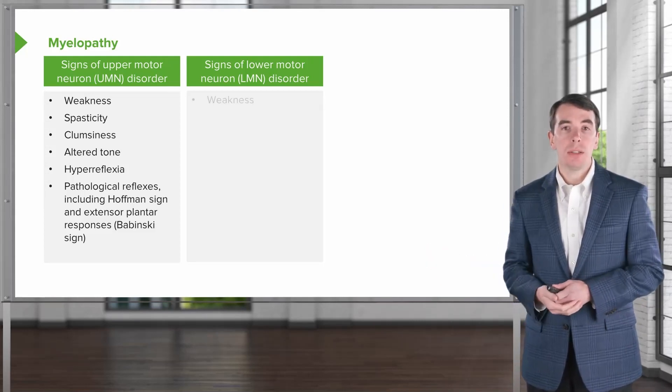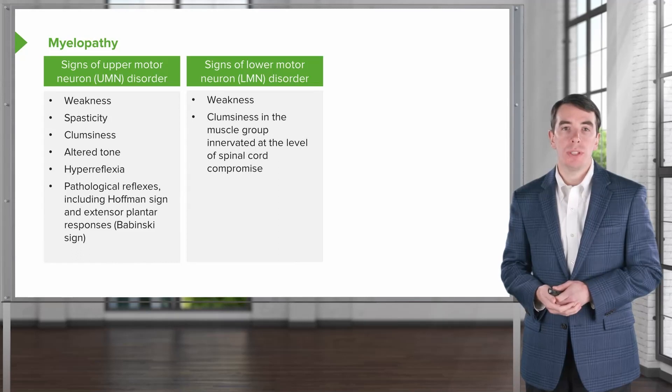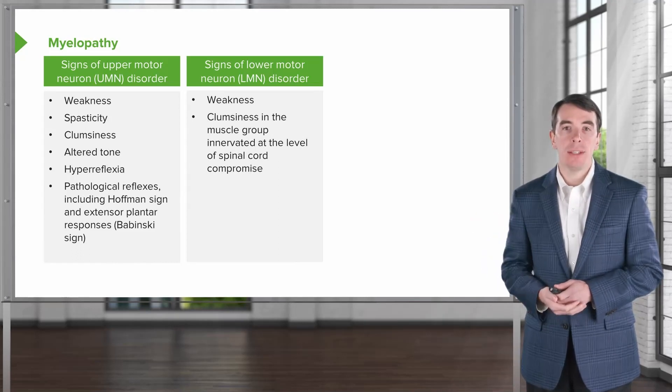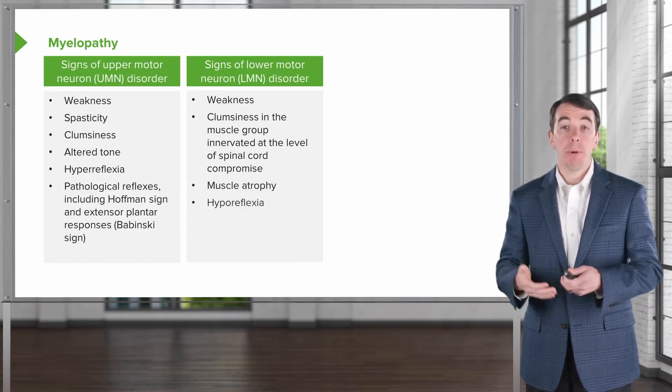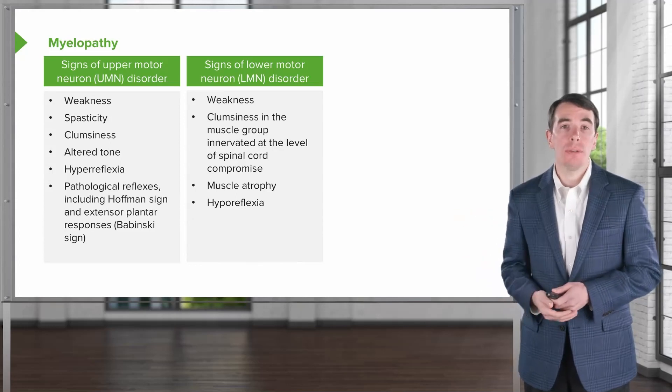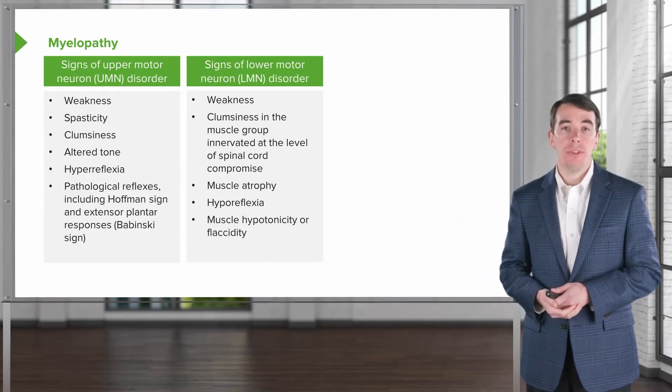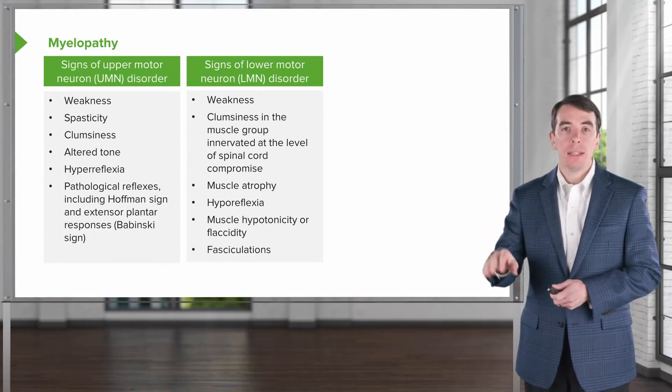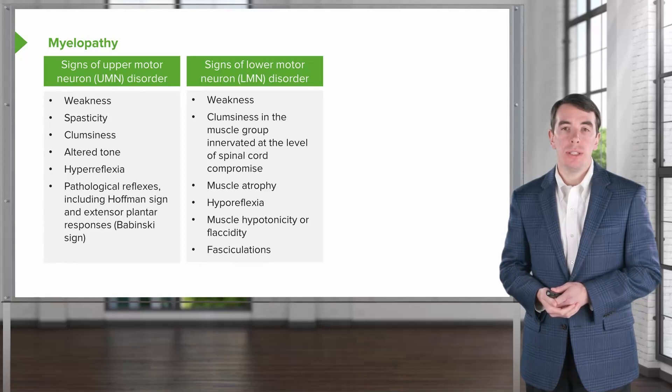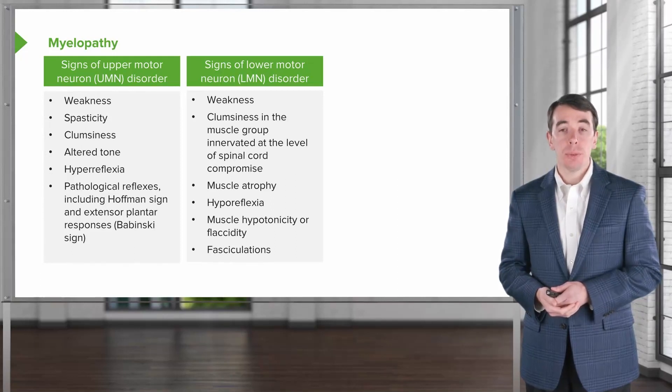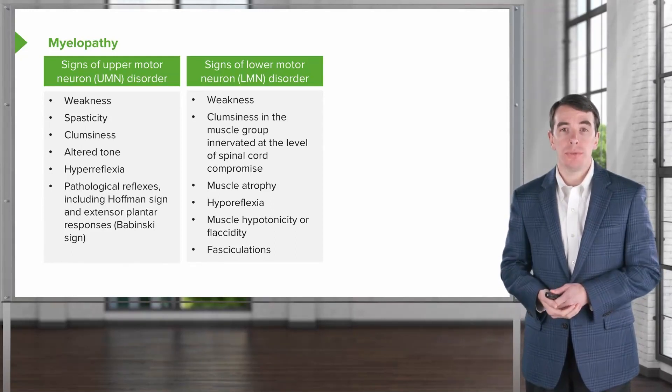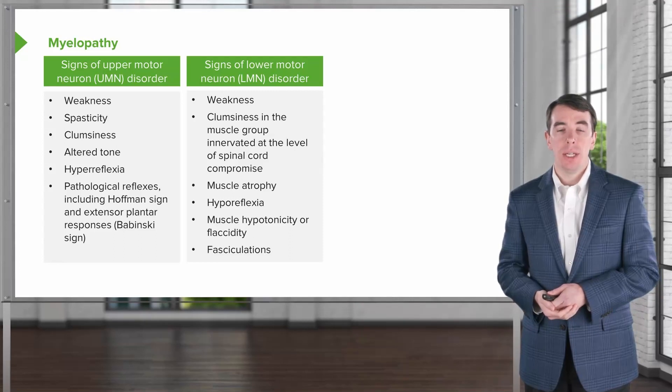Lower motor neuron signs may include weakness, clumsiness in the muscle group that's innervated at that level, the myotome, muscle atrophy, hyporeflexia at the level of the lesion, muscle hypotonicity or flaccidity of the muscles, and fasciculations. Fasciculations are involuntary movements of the muscle, a lower motor neuron sign that results from denervation at the level of that lesion.